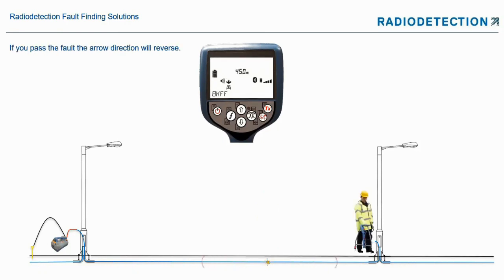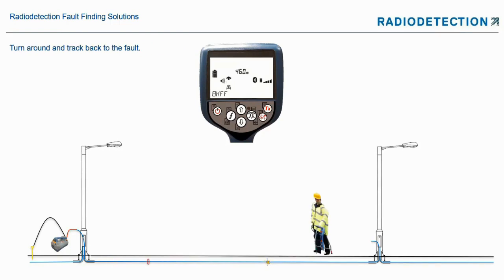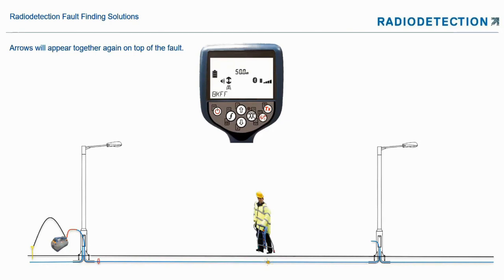If you go past the fault, the reading will drop and the arrow will start pointing the other direction, telling you you've gone past it — turn around. Then you'll have to dig the fault up and repair it, then check if there are any others. When you've found where the fault is, turn 90 degrees and come from the direction parallel to it so you can pinpoint exactly where it is. Coming in at 90 degrees, you should be able to pinpoint the fault location.